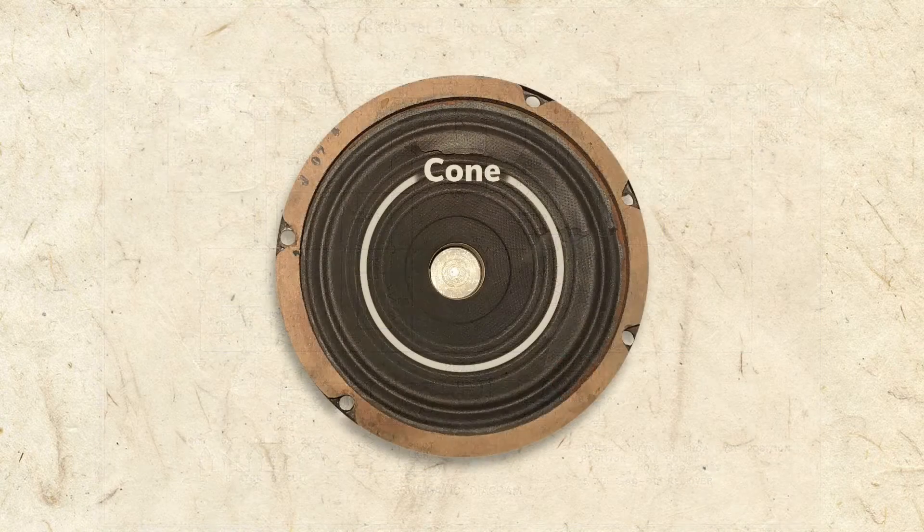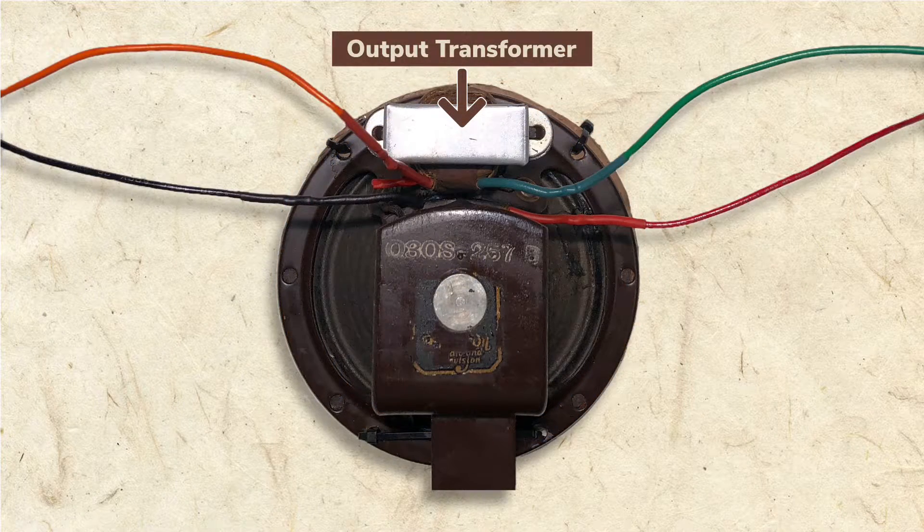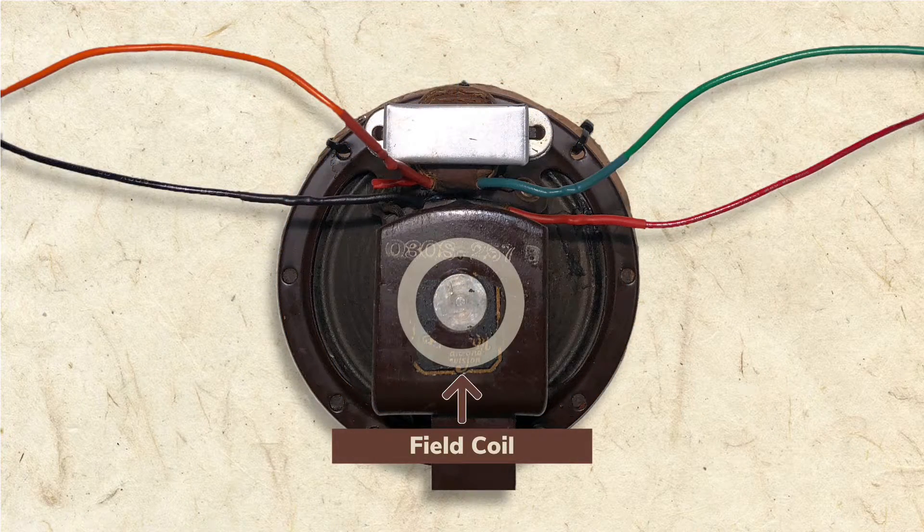On the actual speaker, the cone, voice coil, and output transformer are readily visible, but the field coil is hidden inside.